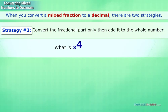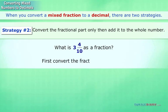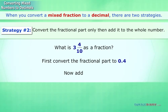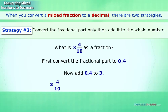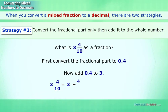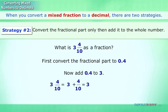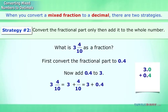What is 3 and 4 tenths as a decimal? First, convert the fractional part: 4 tenths equals 0.4. Now add 0.4 to 3. 3 and 4 tenths equals 3 plus 4 tenths equals 3 plus 0.4. Answer: 3.4.